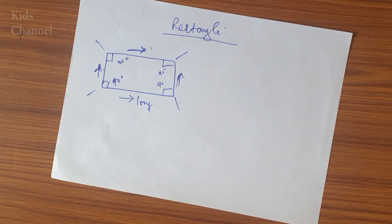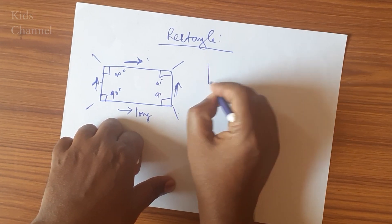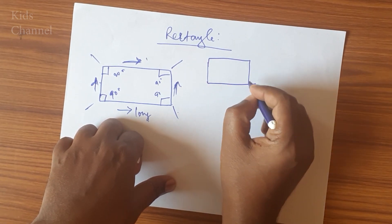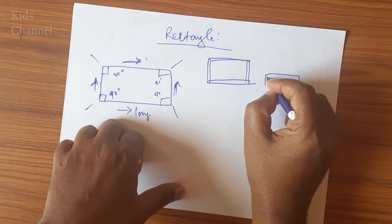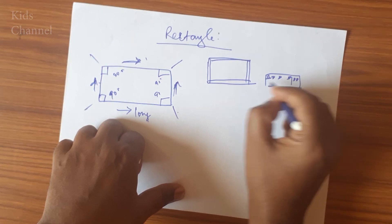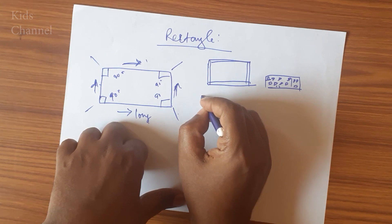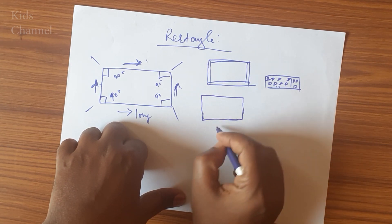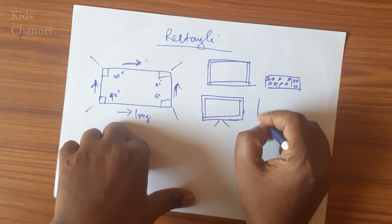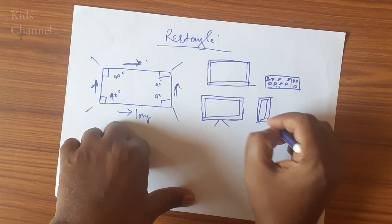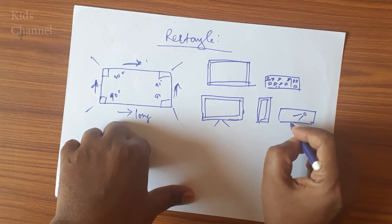Now we will see which objects look like a rectangle. A blackboard in your school looks like a rectangle. A computer keyboard looks like a rectangle. An LCD TV in your home looks like a rectangle. Your mobile phone looks like a rectangle. And your geometry box looks like a rectangle.